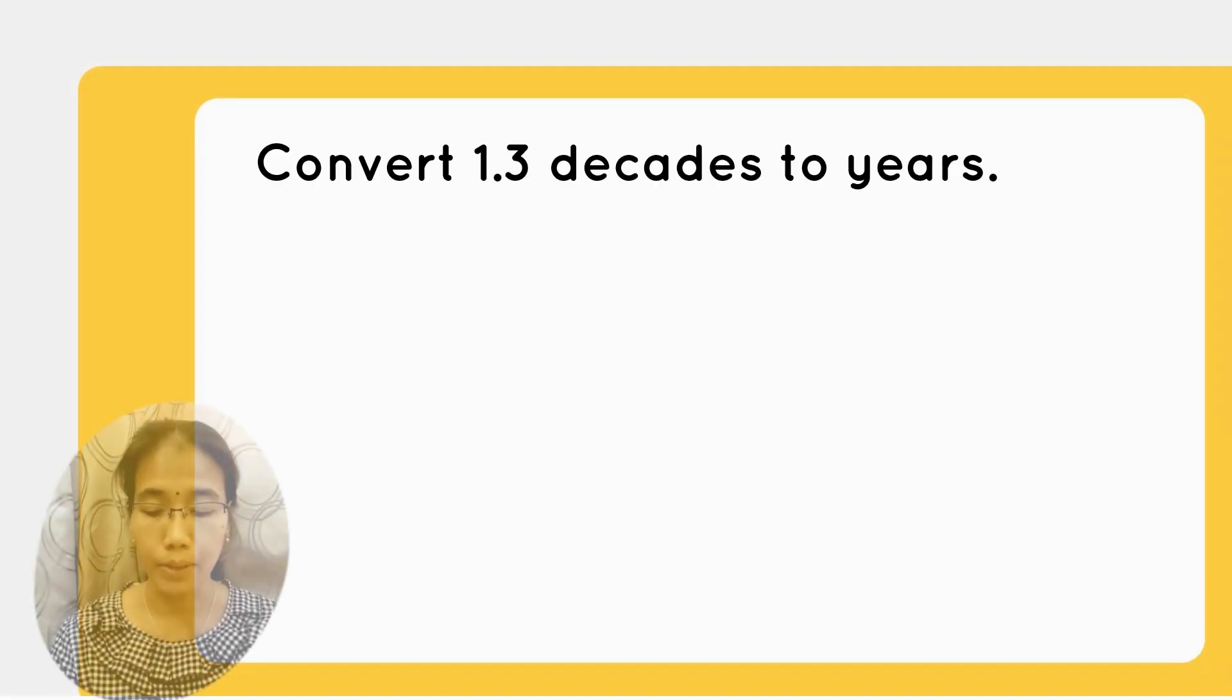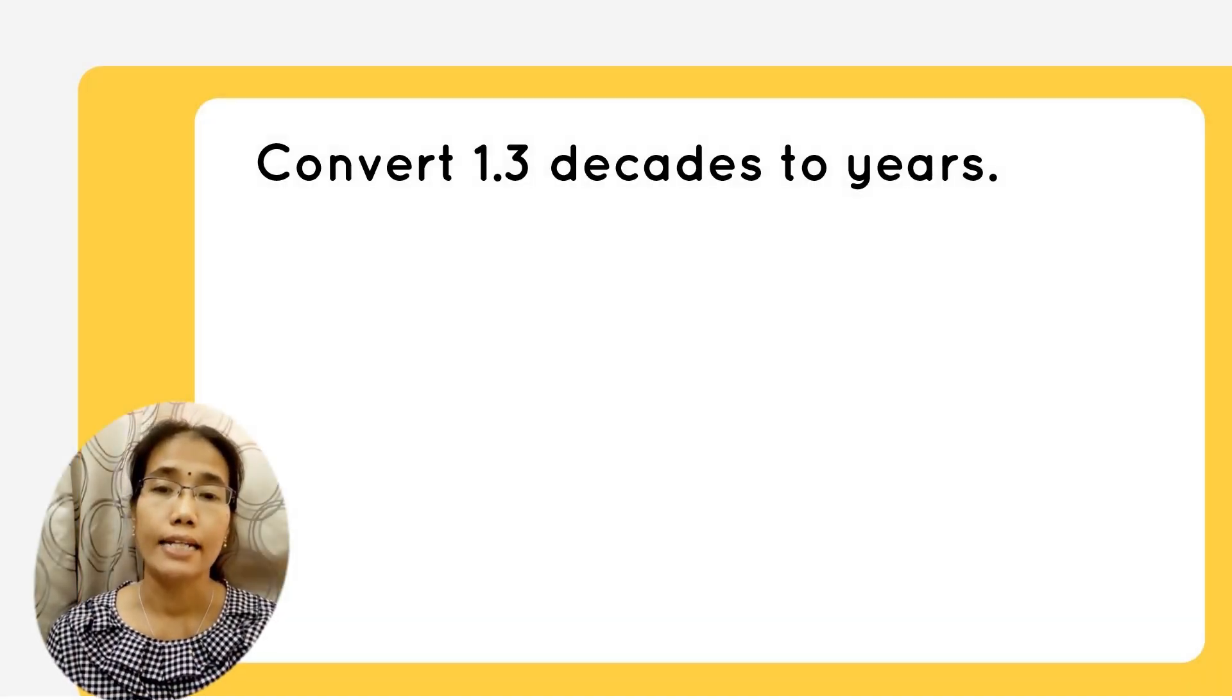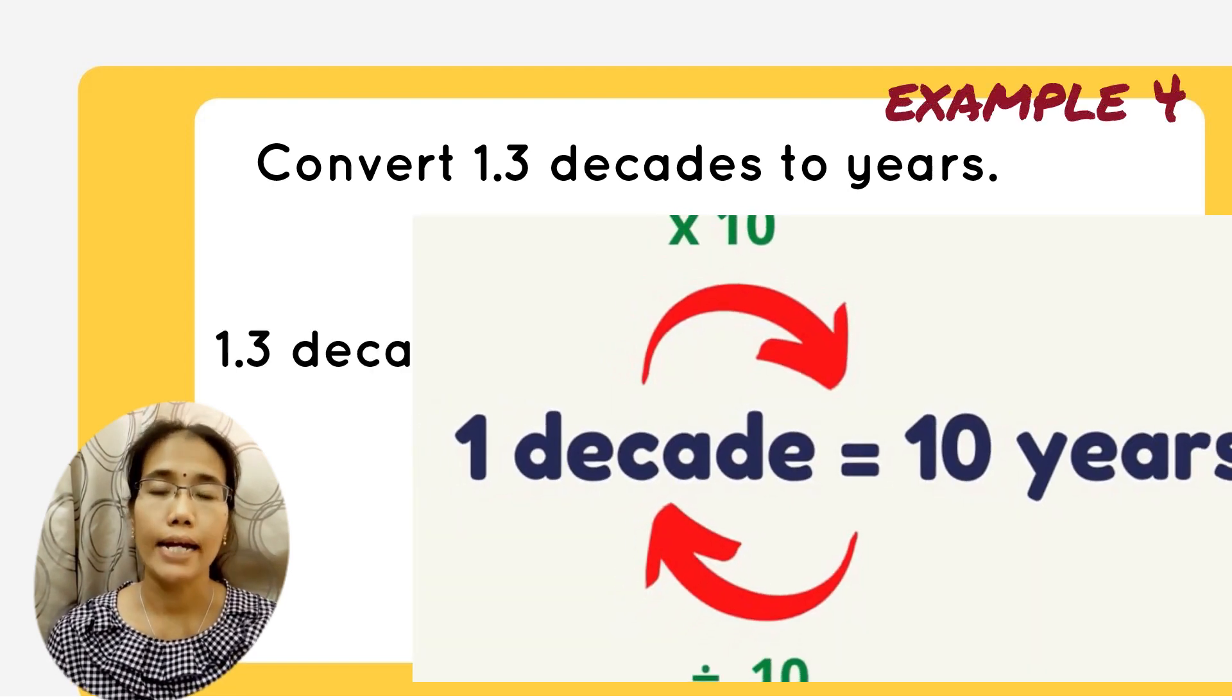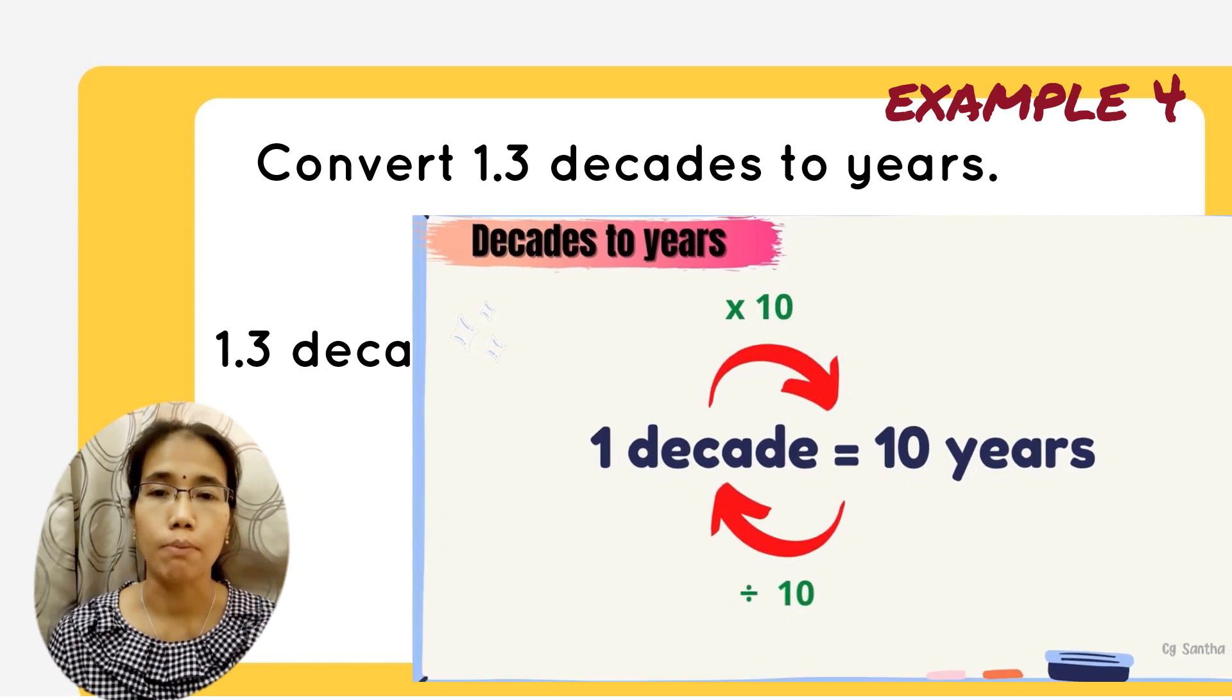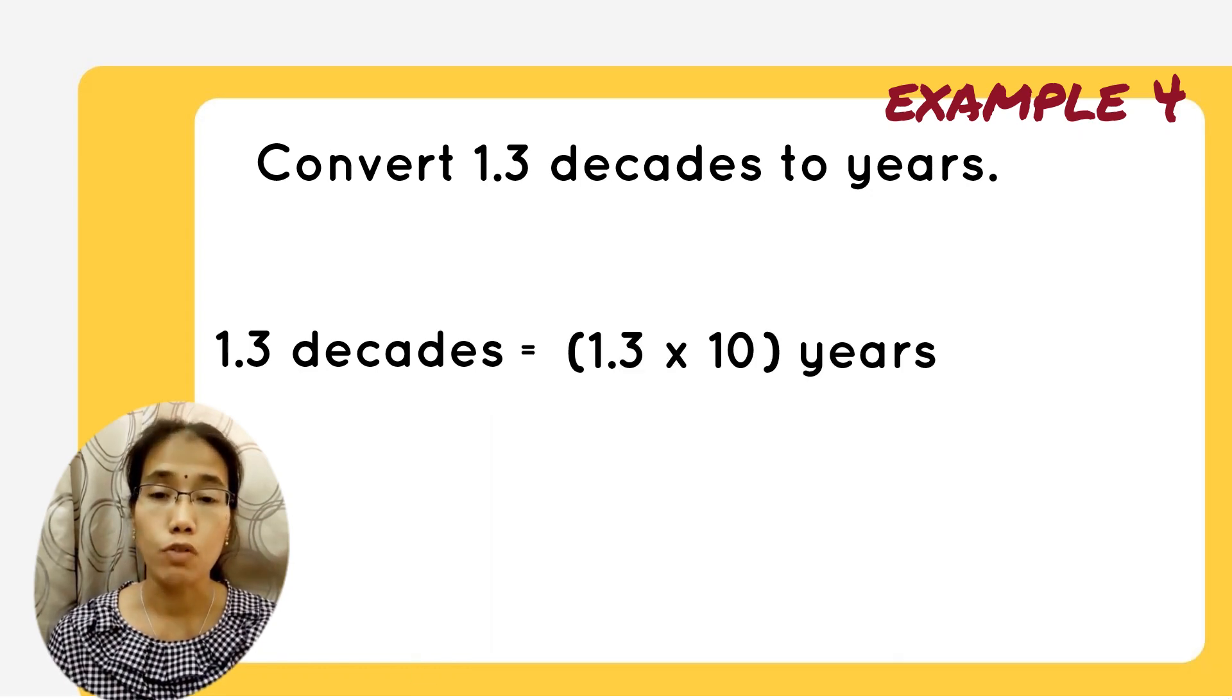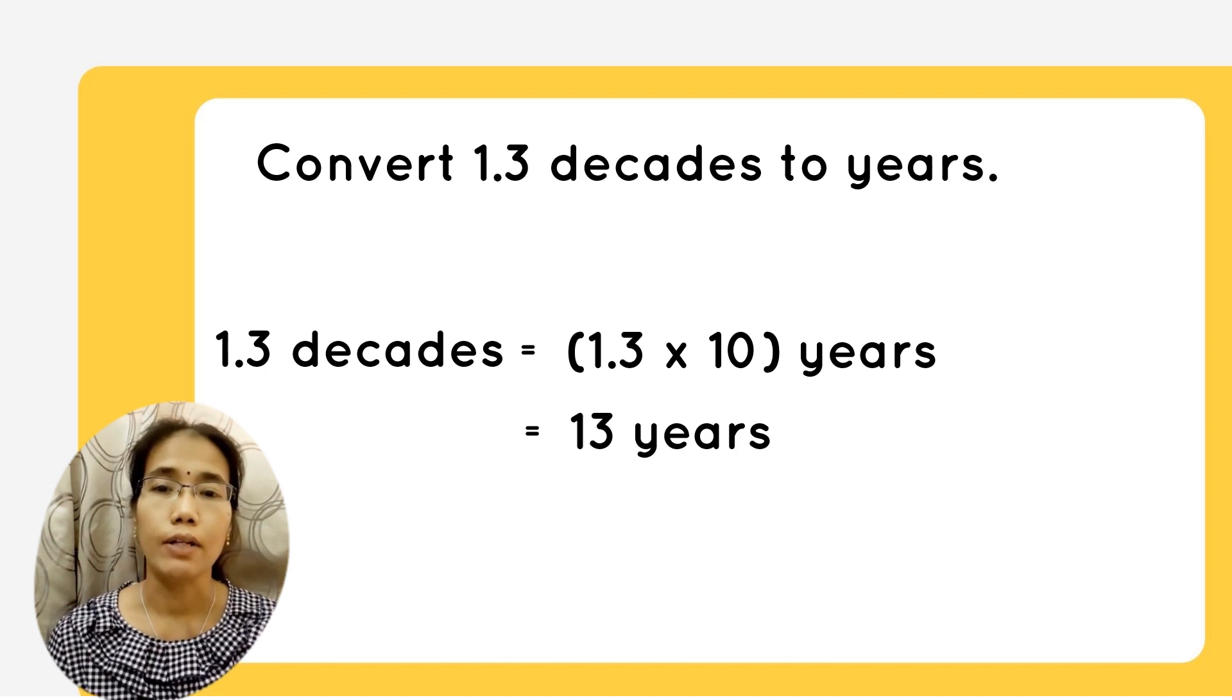Let's see another example. You have 1.3 decades, convert to year. 1 decade equals to 10 years. So, when you want to convert, you have to multiply with 10. So, 1.3 multiplied with 10, you will get 13 years.